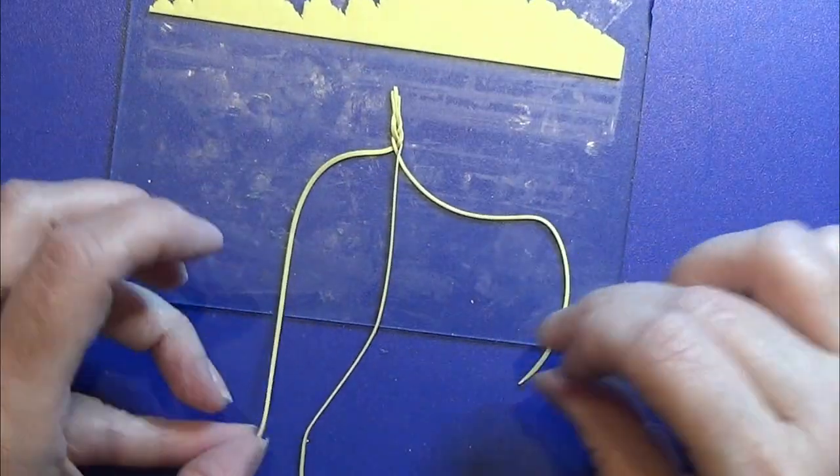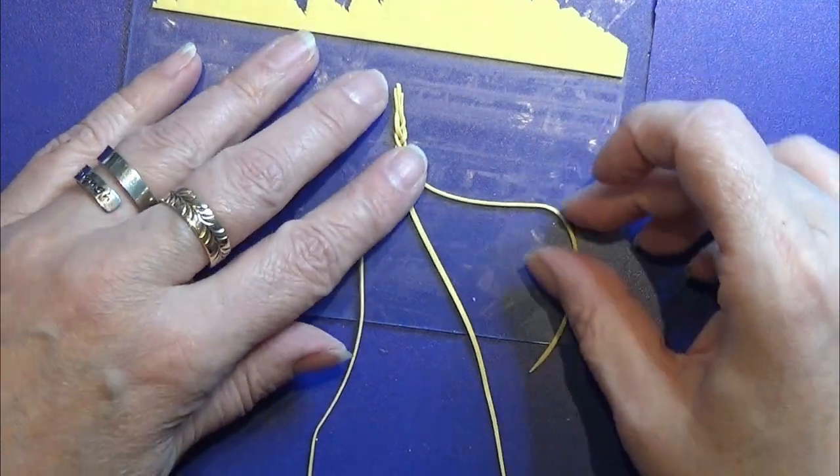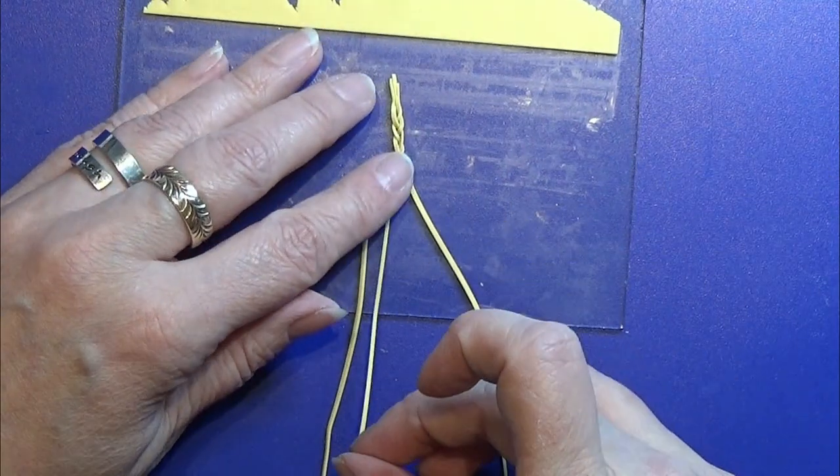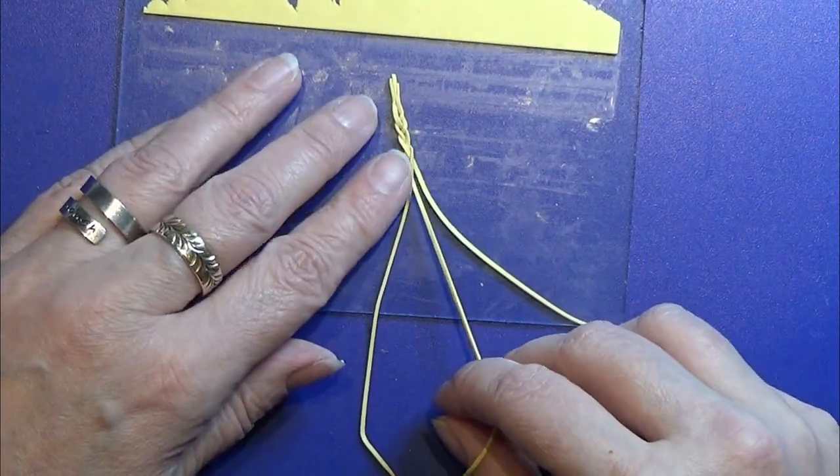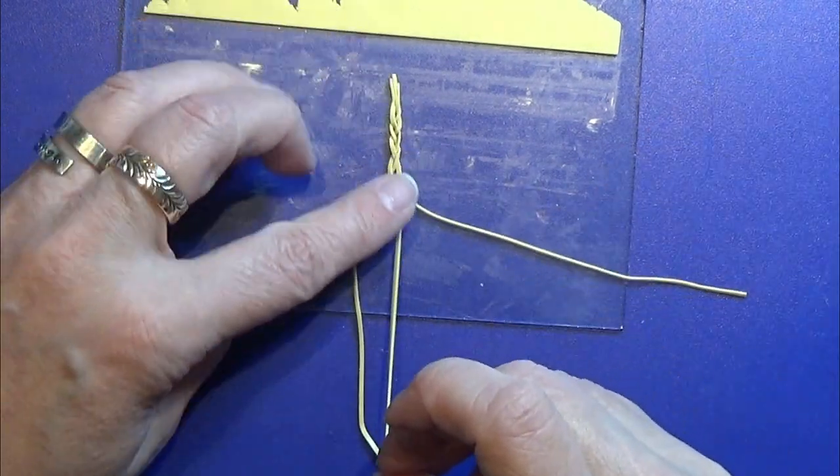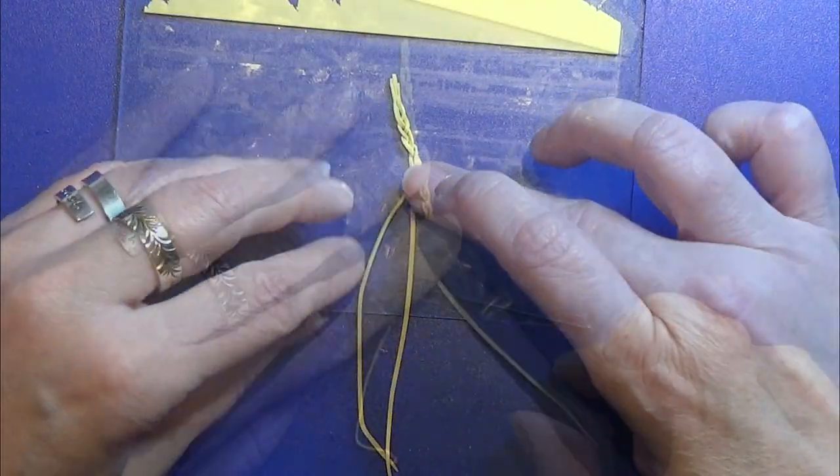I cut out three thin slices of the clay and I carefully braided this little piece all the way down. And I'm going to use these for the horns on the goat.